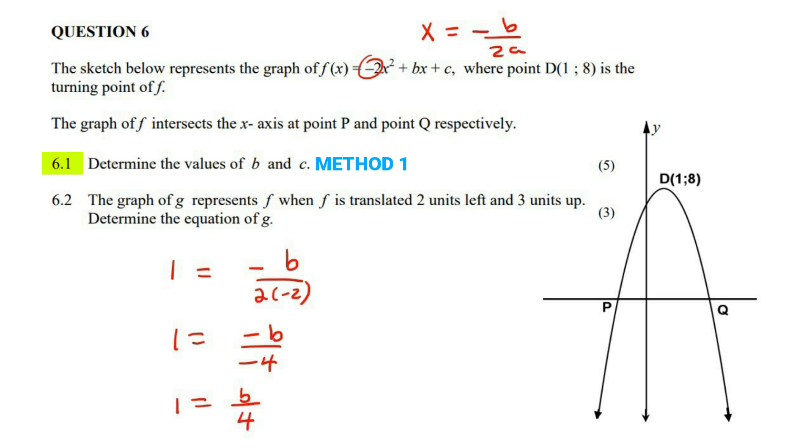To get b alone, you are going to multiply this four over to the other side. And so you end up with four is equal to b. And so we have the value of b now, plus four times x plus c.